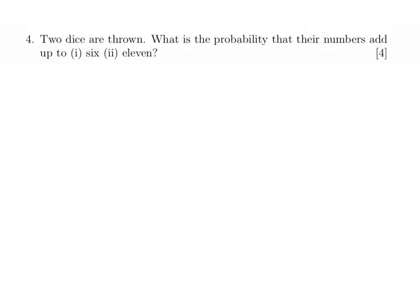This is the second example, taken from paper 2007. Two dice are thrown. What is the probability that their numbers add up to six, and then to eleven? For the number six: the probability of having a one on the first dice and a five on the second dice — the probability of getting a one is one sixth, and the probability of getting a five is one sixth. We multiply along the branches, giving one out of thirty-six.